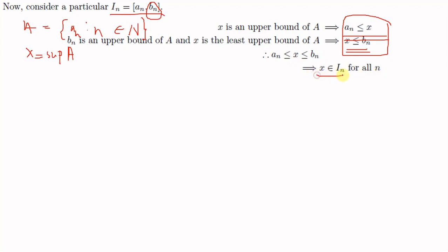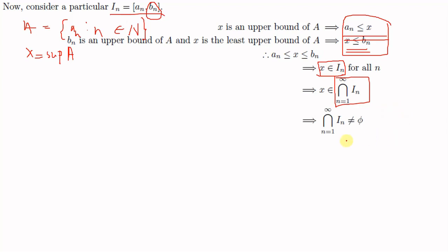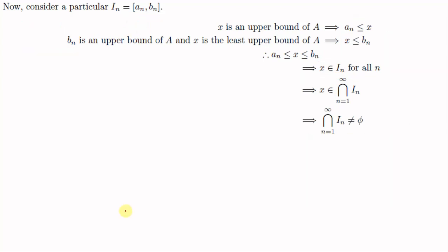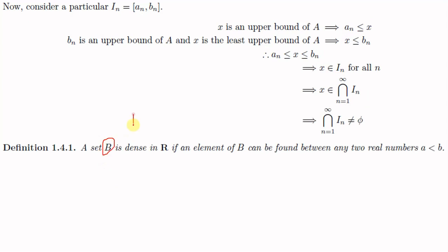This means x is an element of I_n for all n ∈ ℕ. So if x belongs to all the I_n's, then x is an element of the infinite intersection ⋂_{n=1}^{∞} I_n. This means that ⋂_{n=1}^{∞} I_n is non-empty, and this proves the theorem.